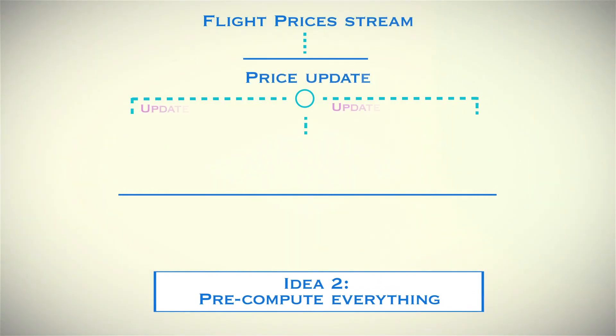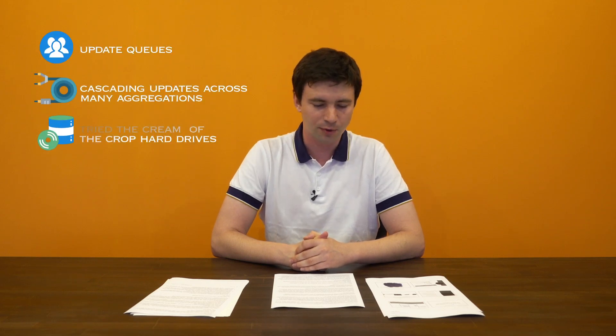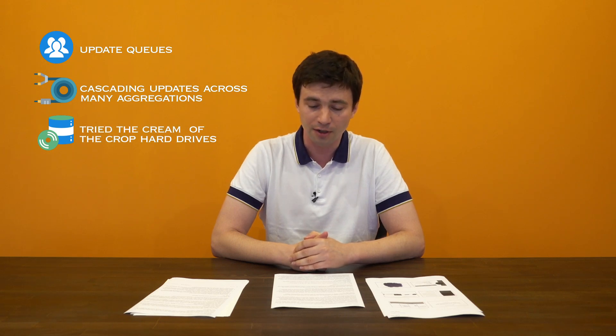The second idea was very similar to the first one. We decided to pre-compute all the results for every query type but still store everything in one SQL database. So whenever we get a price update, we check: is it now the cheapest flight per city? If yes, we update the table. Is it the cheapest per country? If yes, we update another table. Is it the cheapest per month? And so on and so forth for 64 different types of aggregations. We tried being very smart — we had update queues, cascading updates across many aggregations, cream-of-the-crop hard drives, even Fusion IO drives plugged into a video card port. It worked, but only for a couple of years, and then it started falling apart because now we had too many writes. Every price update still had to be written to every single database.